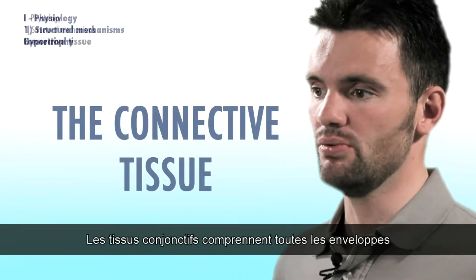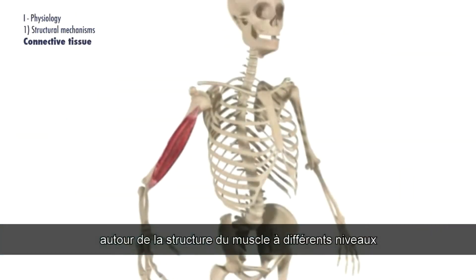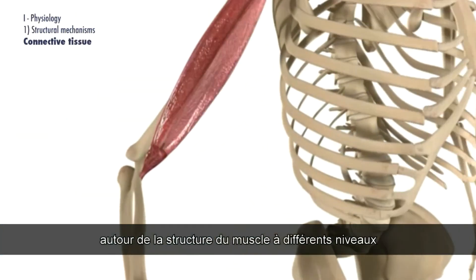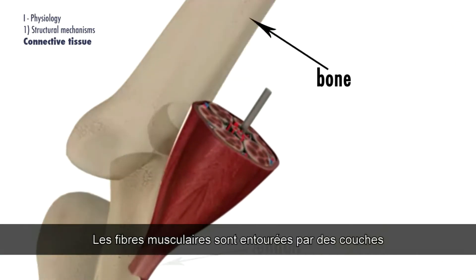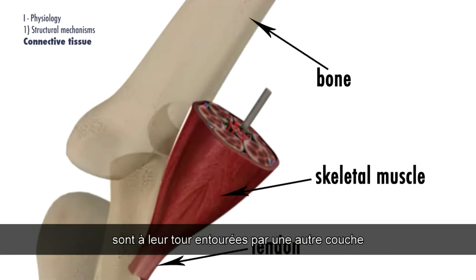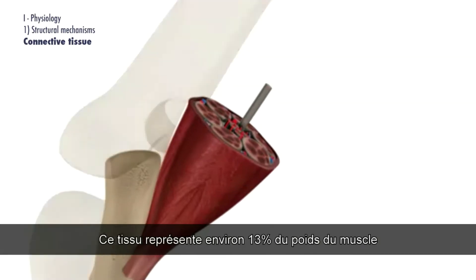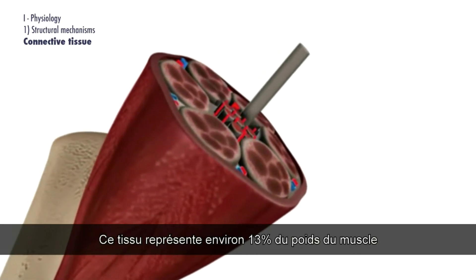The connective tissue includes all the envelopes around the muscle structure at different levels. Muscle fibers are surrounded by layers, then fiber bundles are also surrounded by another layer, and the muscle itself by connective tissue called fascias. This tissue represents around 13% of the muscle weight.